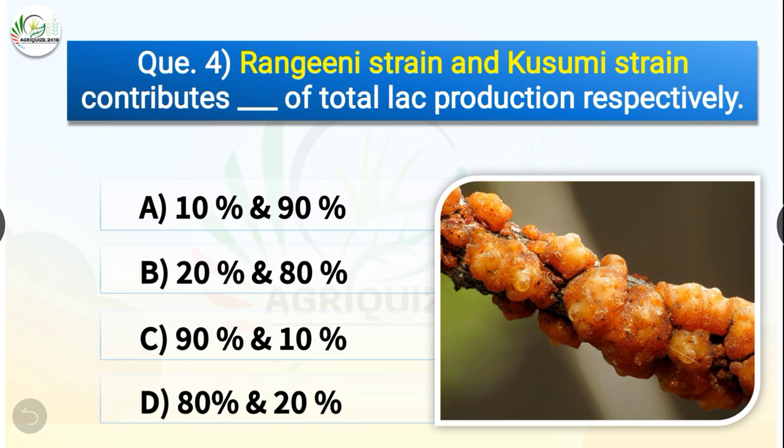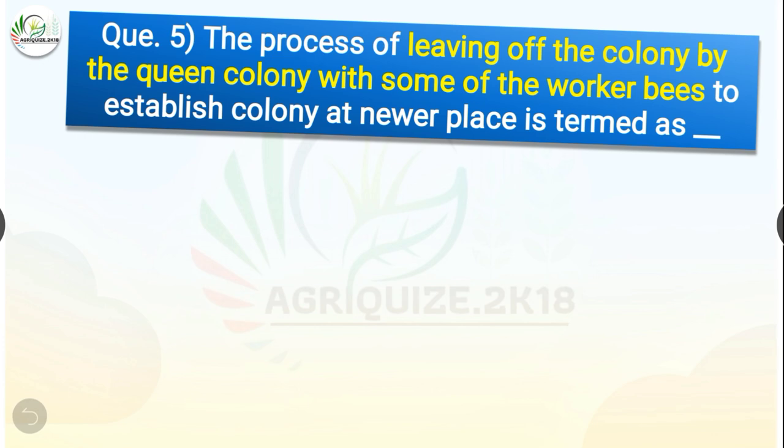Question number four: Rangini strain and Kusumi strain contributes dash of total lac production respectively. The options are 10% and 90%, 20% and 80%, 90% and 10%, or 80% and 20%. The correct answer is option C — 90% and 10%. So Rangini strain and Kusumi strain contribute 90% and 10% of the total lac production respectively.